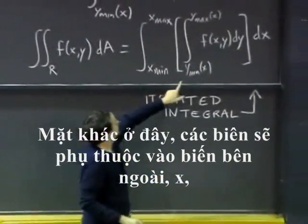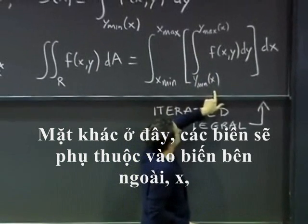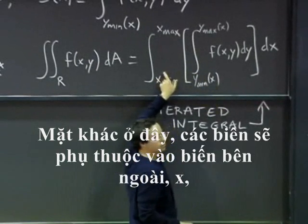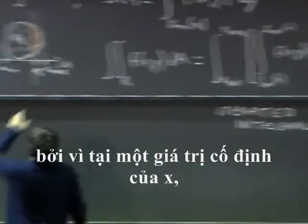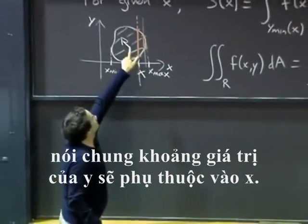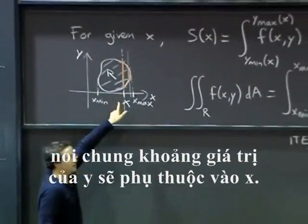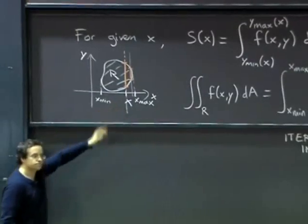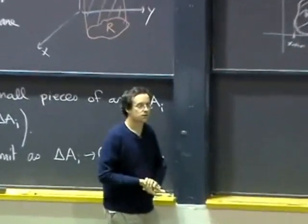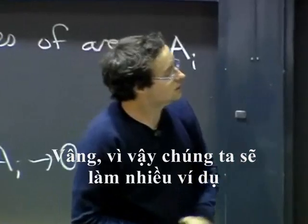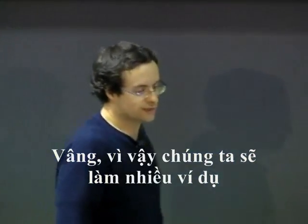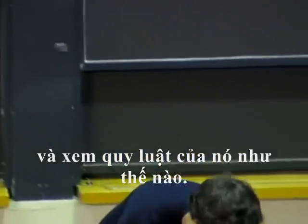On the other hand, here, the bounds will depend on the outer variable x. Because if I fix a value of x, what the values of y will be depends on x in general. OK, so I think probably we should do lots of examples to convince ourselves and see how it works.